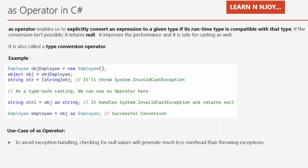Now, the AS operator in C#. The AS operator enables us to explicitly convert an expression to a given type if its runtime type is compatible with that type. If the conversion isn't possible, it returns null. It improves performance and is safe for casting, which is why it is also called a type conversion operator — it converts when compatible, otherwise returns null.